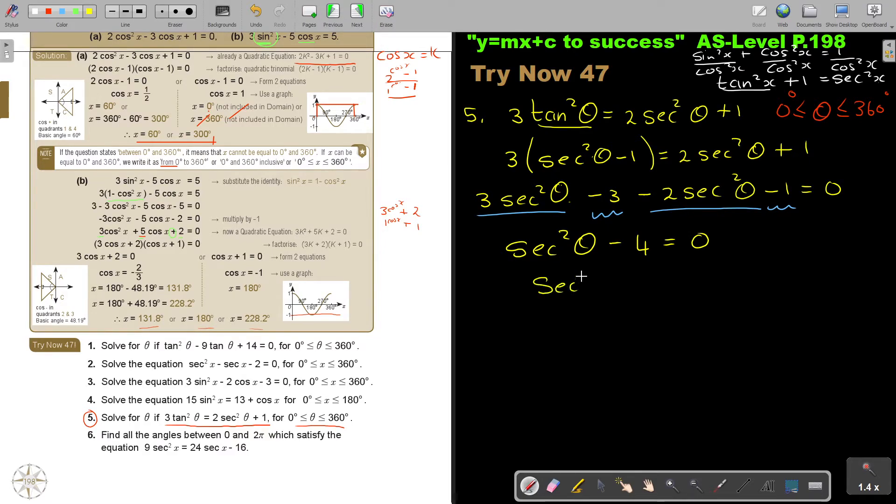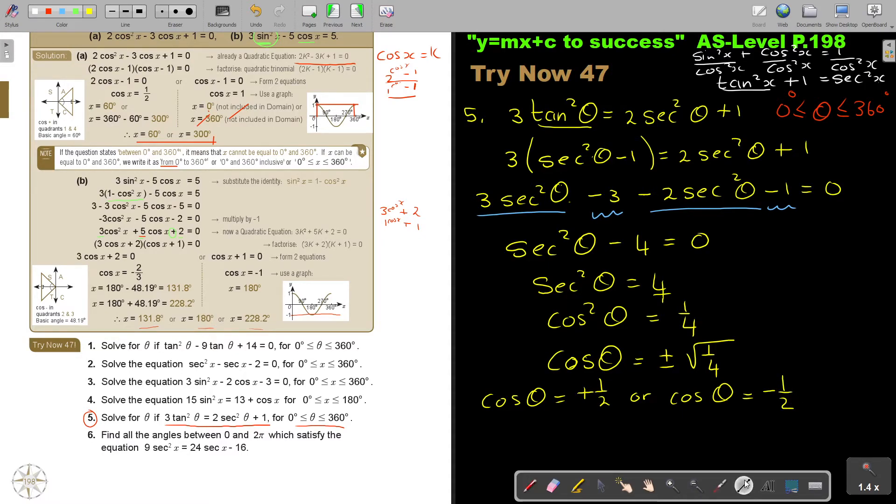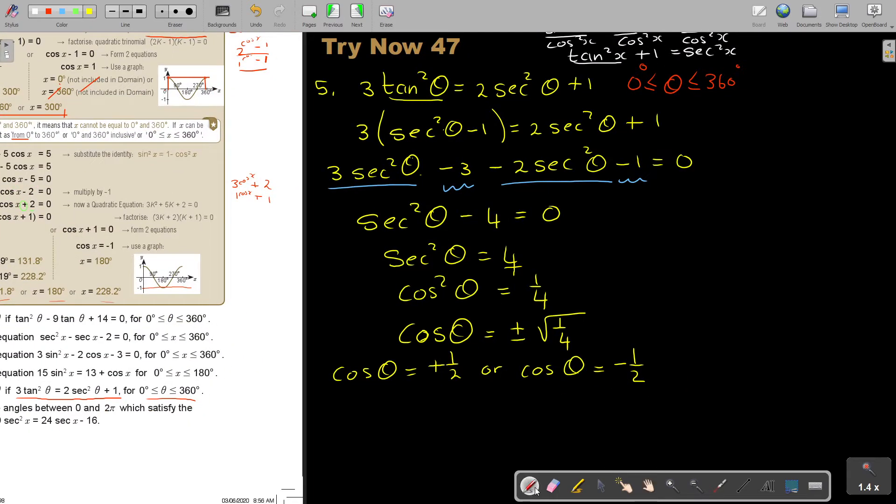So, this will be sec squared theta is equal to 4. So, cos squared theta, put it over 1, equal to a quarter. I'm going to show you another option also. But this is going to be the same. So, I can take the square root. Cos theta equals plus minus square root of a quarter. And what is the square root? Square root of 0.25 is a half. So, I have cos theta equals positive a half, or cos theta equals minus a half. I just want to stop here before I continue. I want to show you if somebody, and I think in the teacher's guide, it's like this.